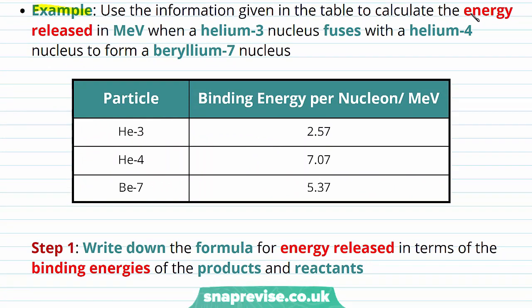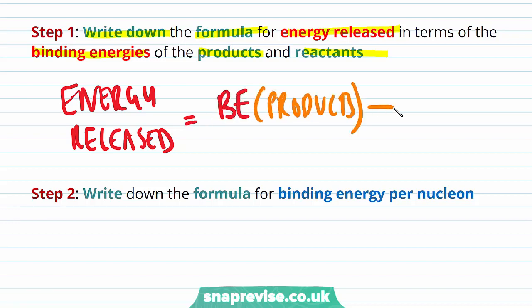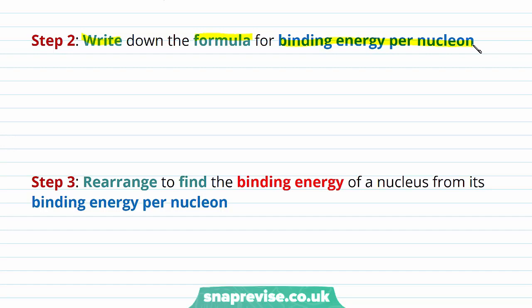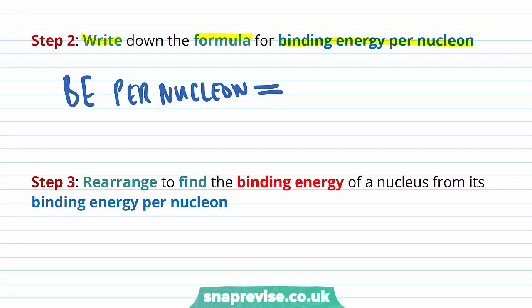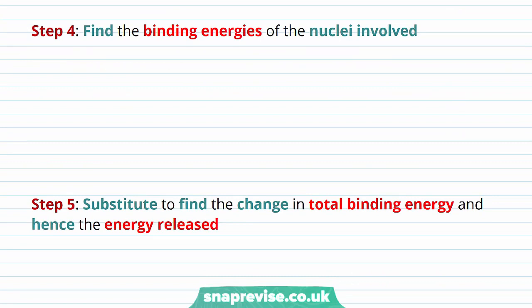For example, use the information in the table to calculate the energy released in mega electron volts when a helium-3 nucleus fuses with a helium-4 nucleus to form a beryllium-7 nucleus. The table gives the binding energy per nucleon for each particle. First, write the formula: energy released = BE of products − BE of reactants. The binding energy of a nucleus equals binding energy per nucleon multiplied by the nucleon number.